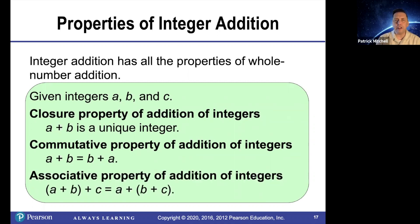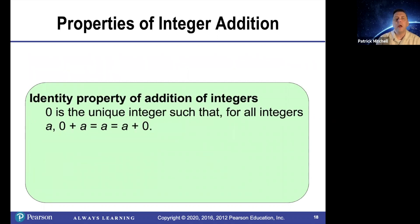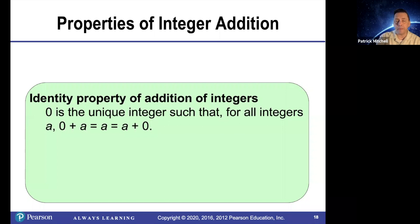Addition of integers is also associative. Zero is the unique integer such that for all integers a, zero plus a and a plus zero are both equal to a, just like with whole numbers. Zero is also a whole number.